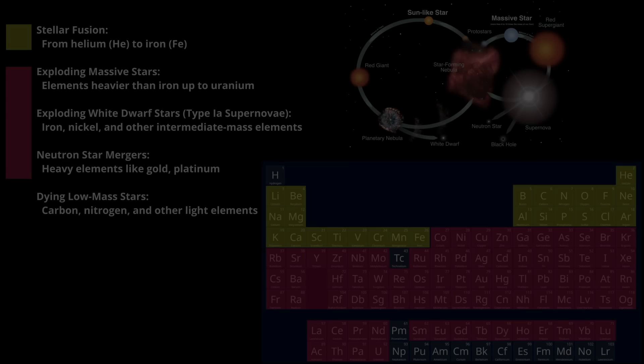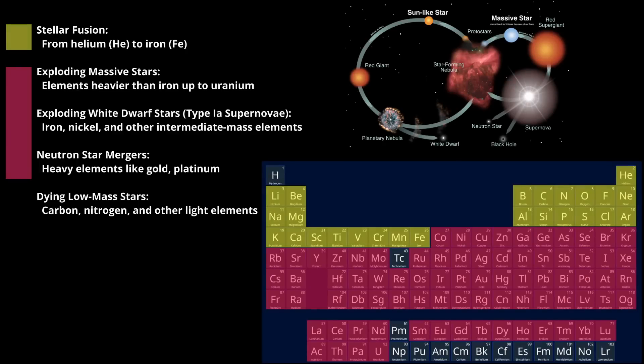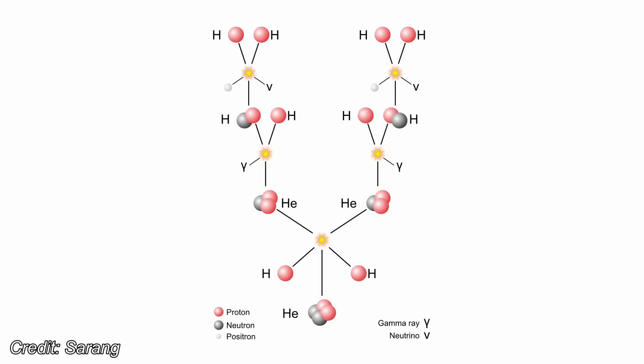Stars are nature's forges, creating elements through nuclear fusion in their cores. In stars like the Sun, this process begins with the fusion of hydrogen into helium via the proton-proton chain, which unfolds over billions of years.